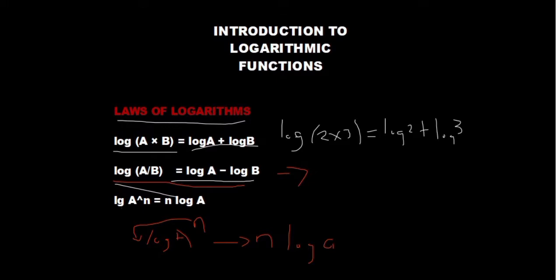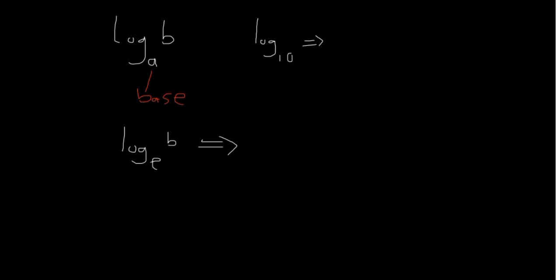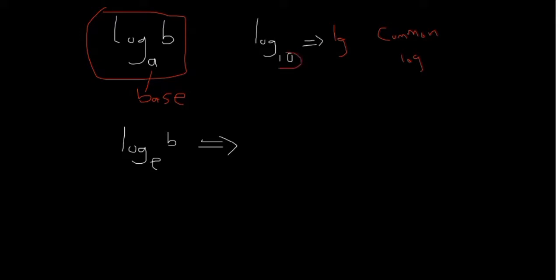Now that we know the basic laws of logarithmic functions, we can move on. An expression written with a base A — A is known as the base. It can be 10, 2, or any base. A log that has got a base of 10 can also be written as LG. This is also known as common logarithms. Whenever you see the term common logarithms, we're talking about a logarithmic function which has got a base of 10.